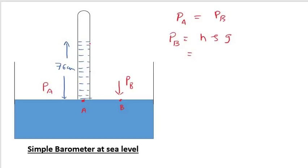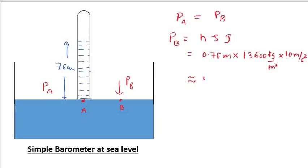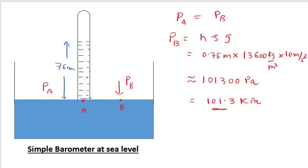This is a practically observed thing. We can put a scale and measure this length. This 76 centimeters is an experimental observation. Converting that into meters, density of mercury is 13600 kg per meter cube, multiplied by 10 or 9.8 meter per second square. This value roughly turns out to be 101300 pascals, which can also be written as 101.3 kilopascals — this is the value of Pb. So the atmospheric pressure can be calculated with the help of this experiment, giving us 101.3 kilopascals.